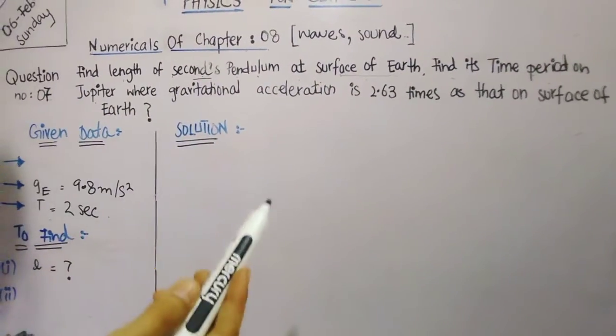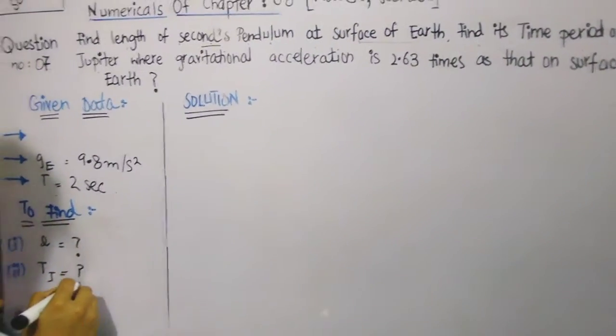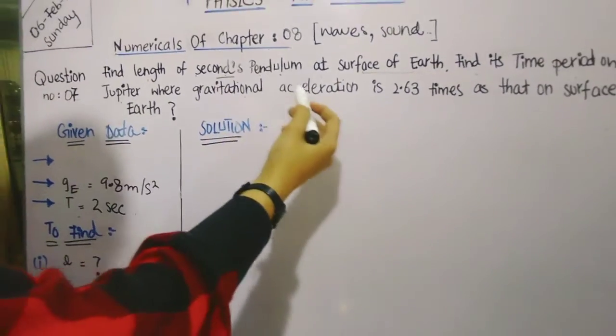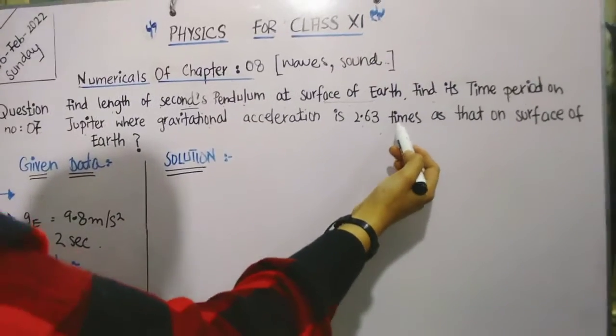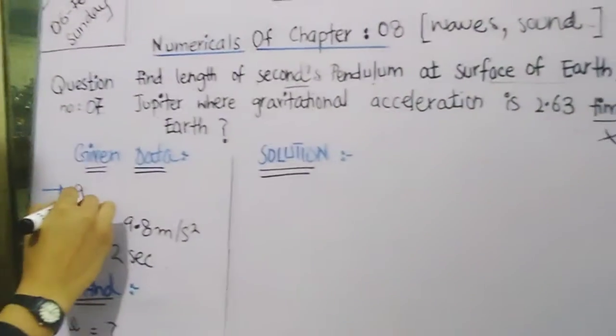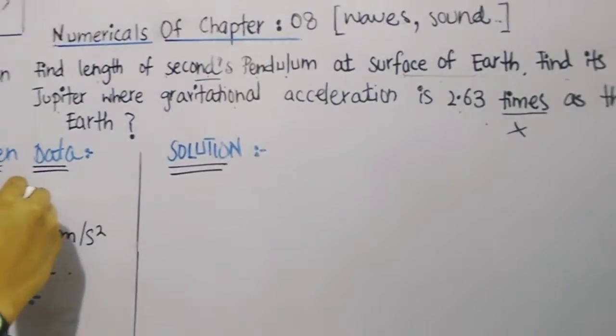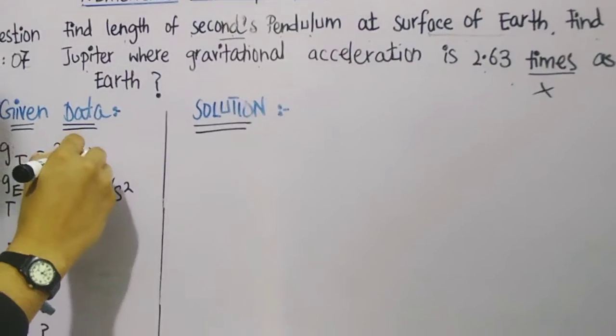And then the next part is find the time period on Jupiter, so we need to find the time period on Jupiter - that is our requirement. Now the condition is where gravitational acceleration is 2.63 times, times means multiplying it.